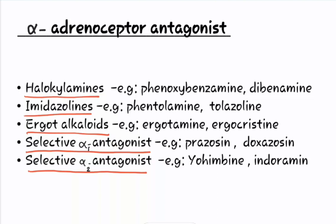The examples of haloalkyl amines are phenoxybenzamine and diabenamine. The examples of imidazolins are phenolamine and tolazolin. The examples of ergot alkaloids are ergotamine and ergocrystine. The examples of selective alpha 1 antagonist are prazosin and doxazosin. The examples of selective alpha 2 antagonist are yohimbine and induramine.